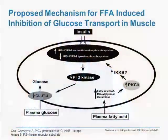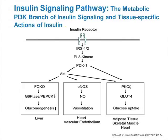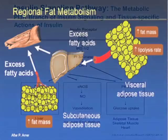Insulin works via PI3-kinase signaling. At the liver it causes decreases in gluconeogenesis; at the heart and vascular endothelium, insulin acts as a vasodilator; and in adipose tissue and skeletal muscle, it allows for glucose uptake. This alternative fuel usage in the presence of both insulin and glucose tends to become a problem when the competing substrates cannot be fully oxidized.